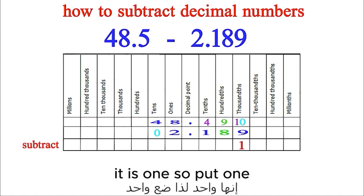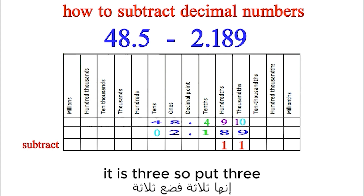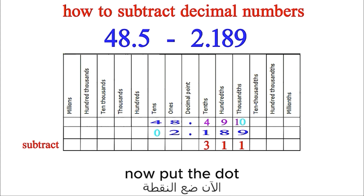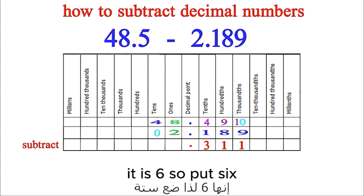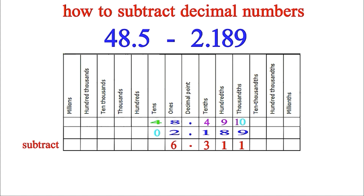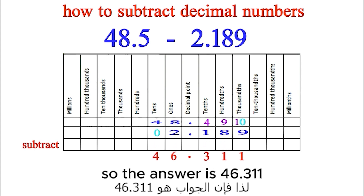9 minus 8 is 1, so put 1. 4 minus 1 is 3, so put 3. Put the dot. 8 minus 2 is 6, so put 6. 4 minus 0 is 4, so put 4. So the answer is 46.311.